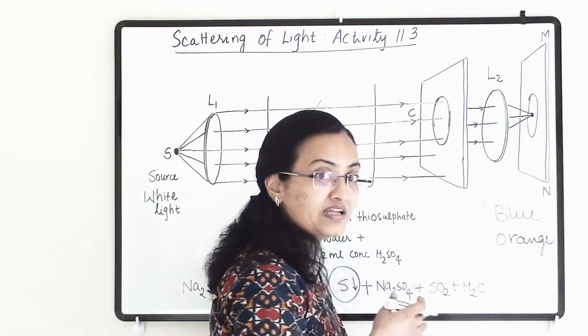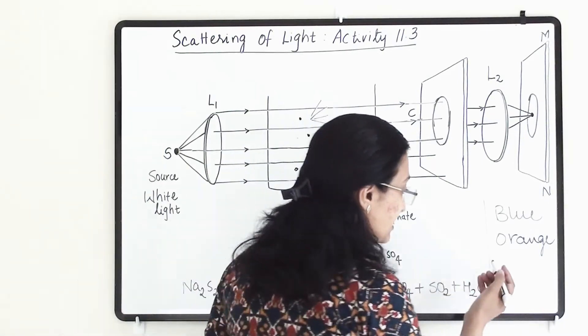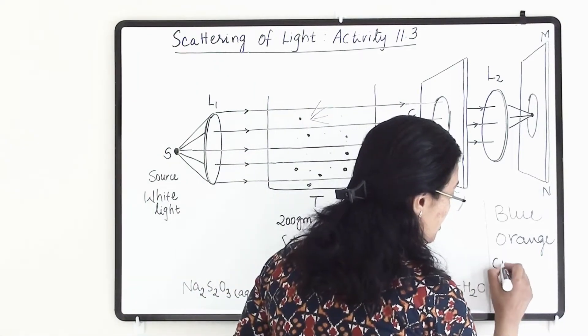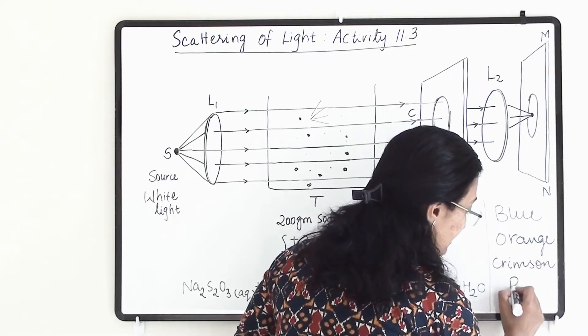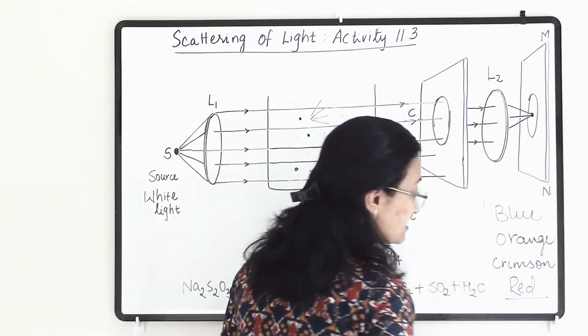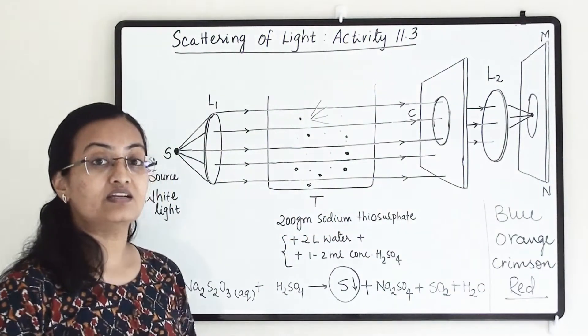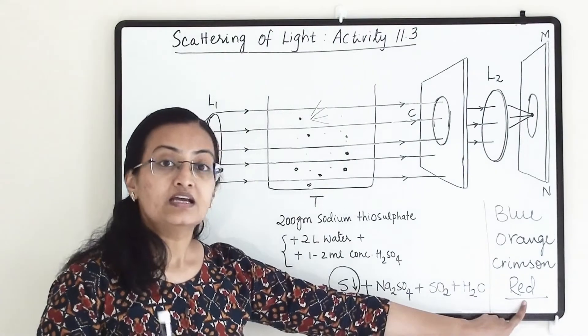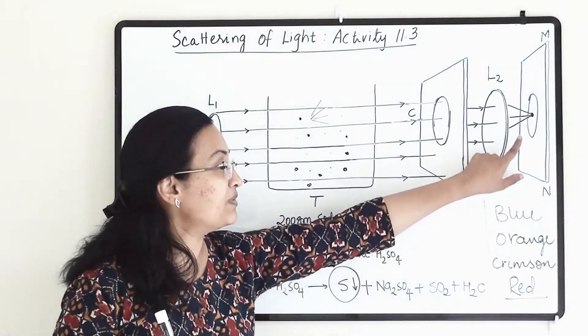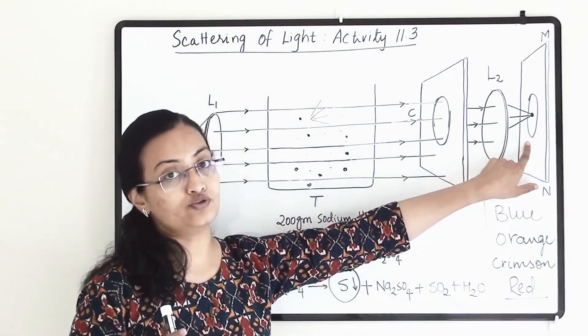After that when particles will become even bigger they will scatter light which has a color that is crimson. And at the last when particles are big enough they will scatter the light which has a maximum wavelength and that is color red. So at last we'll be able to see the red color light over here.